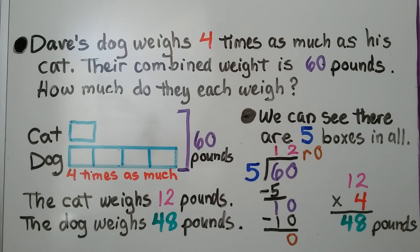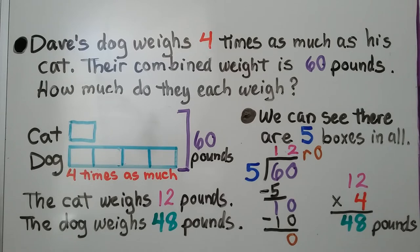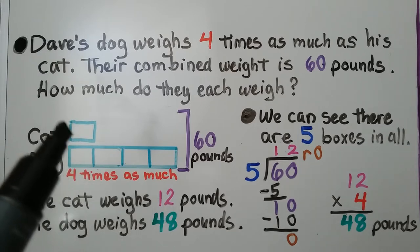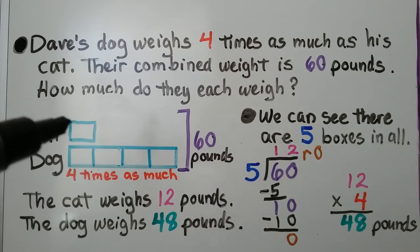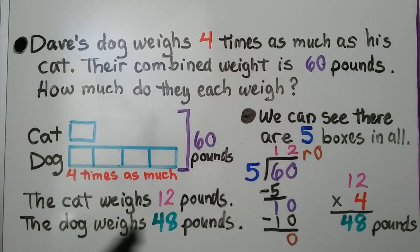And we can see there are five boxes in all. So we're going to divide 60 by 5. We can see 60 divided by 5 is 12. That means the cat weighs 12 pounds — this one box is 12. If the dog is four times as much, we do 12 times 4, which is 48. The dog weighs 48 pounds.